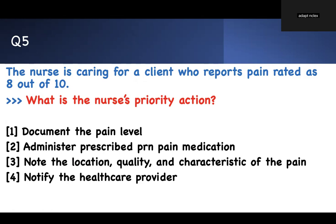Question five: a nurse is caring for a client who reports pain rated eight out of ten. What should you do? Just give them the pain medication, or document their pain level, or give the prescribed pain medication, or assess the location, quality, and characteristics of the pain? You cannot intervene without making an assessment first — common sense tells us that.